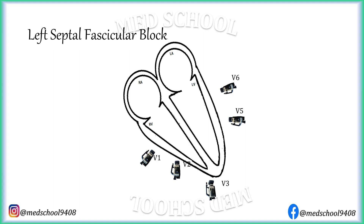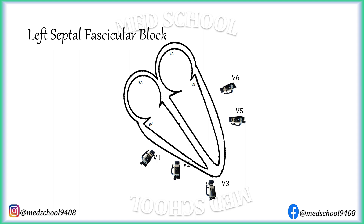Previously, the septal fascicle was thought to be a separate entity, but now it is clear that septal fibers arise from the left bundle branch. Sometimes they may get blocked, and the entity is still called left septal fascicular block. The changes of left septal fascicular block depend on the degree of activation of the septum from the right side. If activation from the right is normal, the septum will be activated from right to left, and there can be an initial Q wave in leads V1 and V2. If activation from the right is also delayed, septal activation occurs simultaneously with left ventricular activation, so there will be no separate septal vector. Septal activation occurring simultaneously with left free wall activation shifts the combined vector to the right in the horizontal plane, usually toward the V3 electrode.